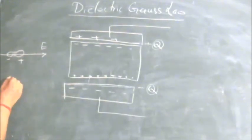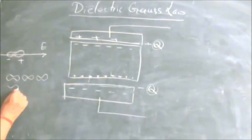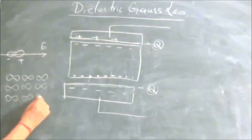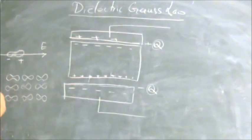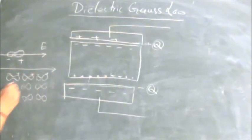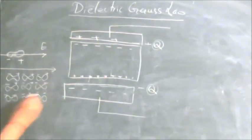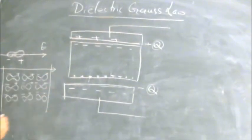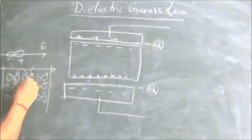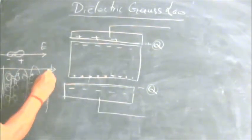Initially the dipoles are in random orientation and the electric fields due to each dipole get nullified and cancelled. But when placed in an electric field, the dipoles align so that the positive charge of each dipole moves in the direction of the electric field and the negative charge moves opposing the electric field. Looking inside, the net charge is zero because positive and negative charges cancel. But on the surface there is induced charge — we can also call it bound charge.